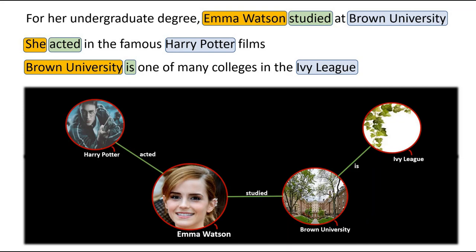To summarize: an automated system reads text from millions of documents, and by using triplet extraction and co-reference resolution models on each sentence, a knowledge graph is constructed. If you're interested, do check out how triplet extractors and co-reference resolution systems based on neural networks are designed.